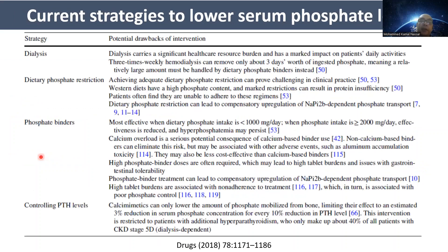The current strategies to lower serum phosphate include dialysis, dietary phosphate restriction, phosphate binders, and controlling parathyroid hormone. Every strategy has its own drawbacks, and they should all be implemented simultaneously.